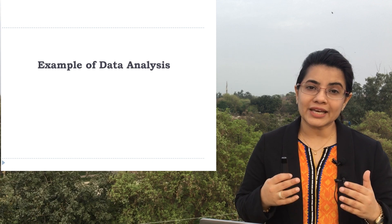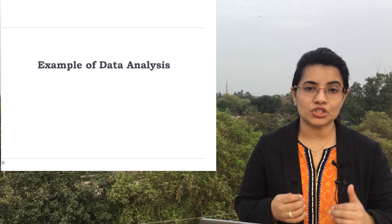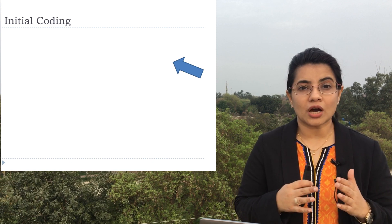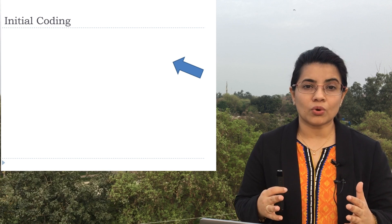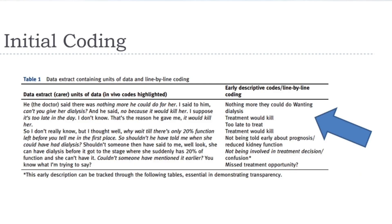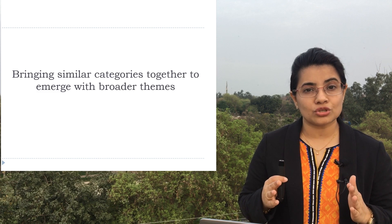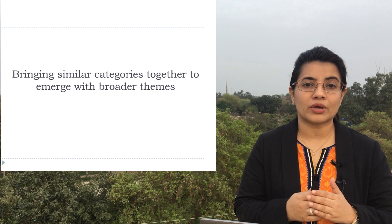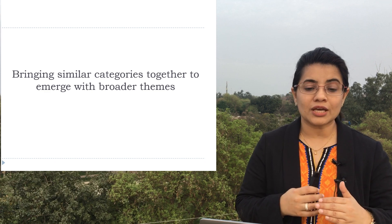Here is an example of data analysis extracted from a journal article, showing how to develop initial coding. In this table, the left side shows extracts from participant interviews — the voices of the participants. The right side shows the initial descriptive codes. After this first coding step, you bring similar categories together to emerge with broader themes.